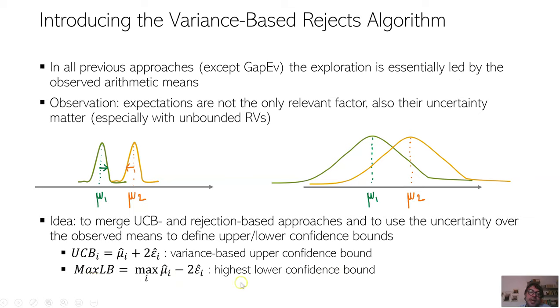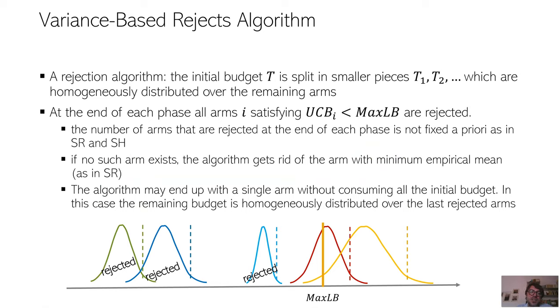And then we define max LB as the highest lower, called the maximum lower confidence bound. So our algorithm VBR is essentially a rejection algorithm where, at the end of each phase, all the arms such that the corresponding upper confidence bound is smaller than the max LB, so the maximum lower confidence bound, all these arms are rejected. So in this case, only the red and the yellow arms survive. And there are also other small technicalities ensuring that at the end we end with a single arm, but I will not describe these details. It is important to note that, at the end of a phase, the number of arms that are rejected is not fixed a priori like in SR and SH, but depends on the shape, on the dispersion of the random variables. So this approach is more flexible with respect to SR and SH.